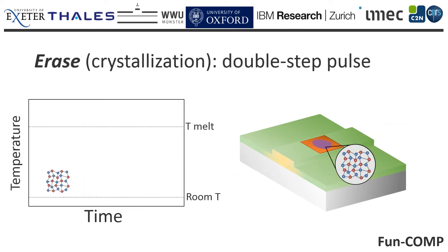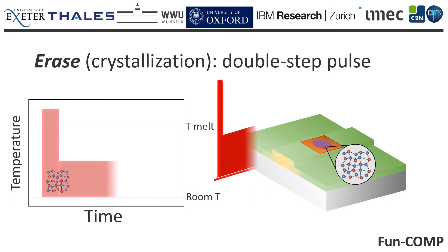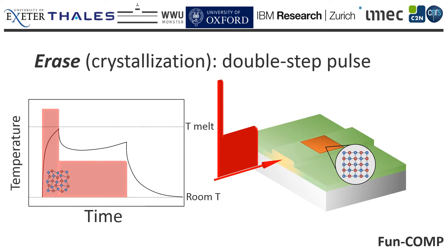Erasure of stored information can be performed by a tailored set of pulses, such as a double-step pulse. In this case, due to low energy absorption, the temperature increase is not enough to melt the phase change material,